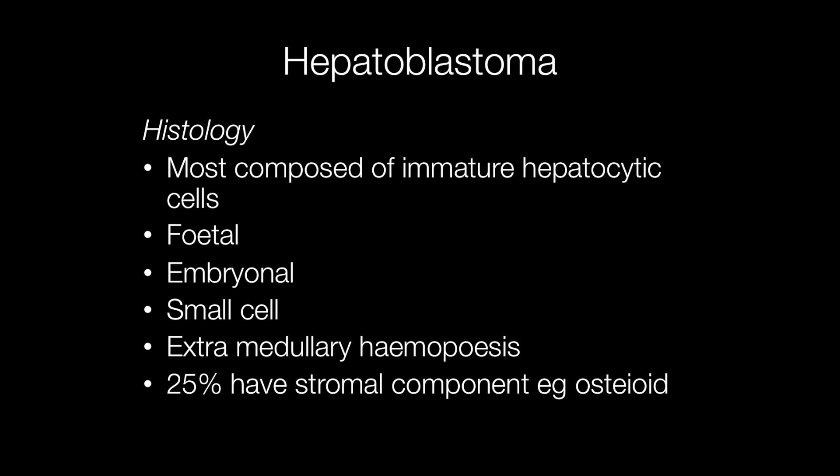Histologically, most hepatoblastomas are composed of immature hepatocytic cells. The differentiation may be subdivided into fetal, where cells are maturing; embryonal, where cells are less mature; and small cell, where cells are very primitive and undifferentiated, resembling other small blue round cell tumours of childhood. Extramedullary haemopoiesis is quite common, and around a quarter of hepatoblastomas have a stromal component, typically osteoid, though cartilage may also be found.